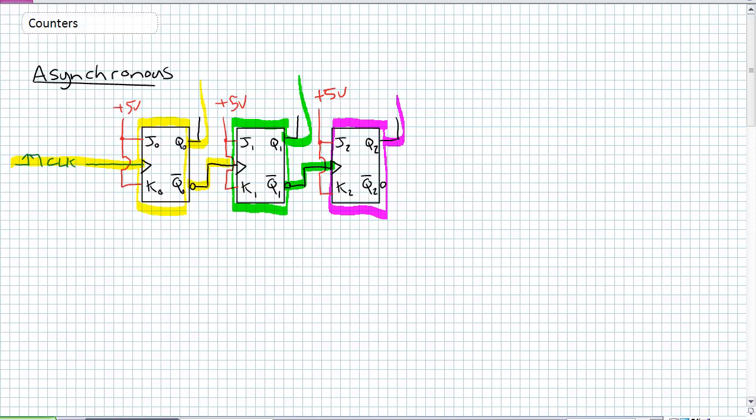So what have I done here? I've just described in very general terms an asynchronous counter. It's got a single clock input to one of the stages. In this case, it is the LSB stage. Those next stages receive the previous stage's output as its clock input. All JK flip-flops in this particular case are in toggle mode.